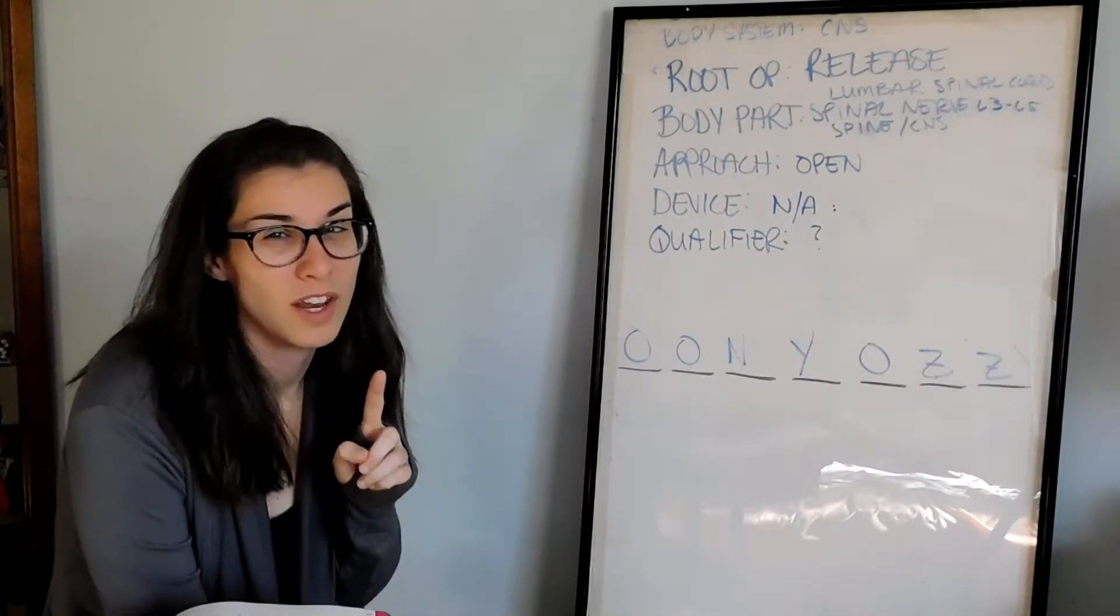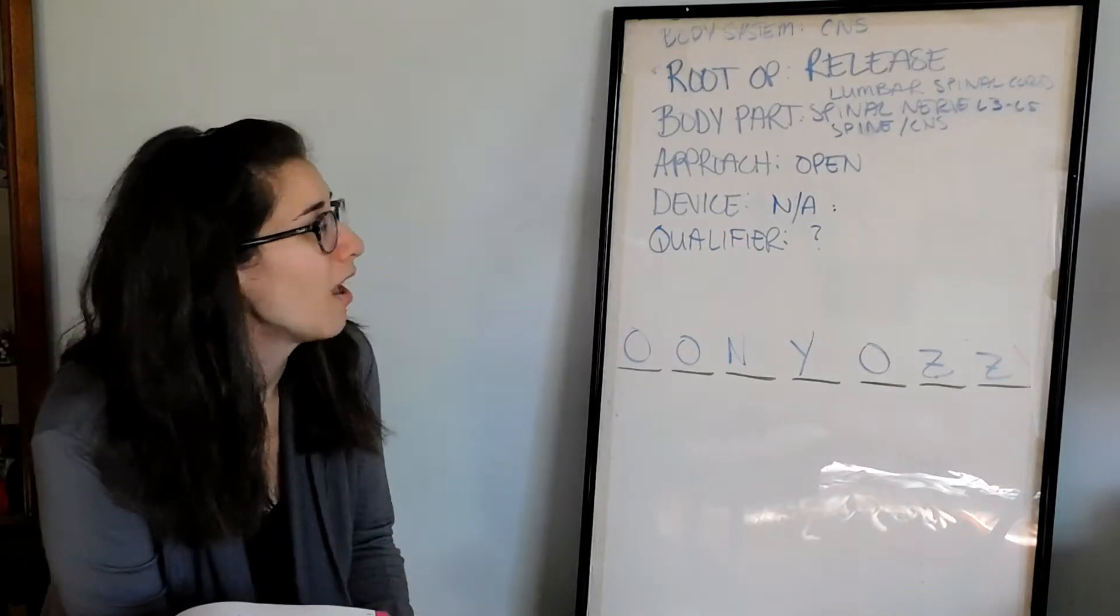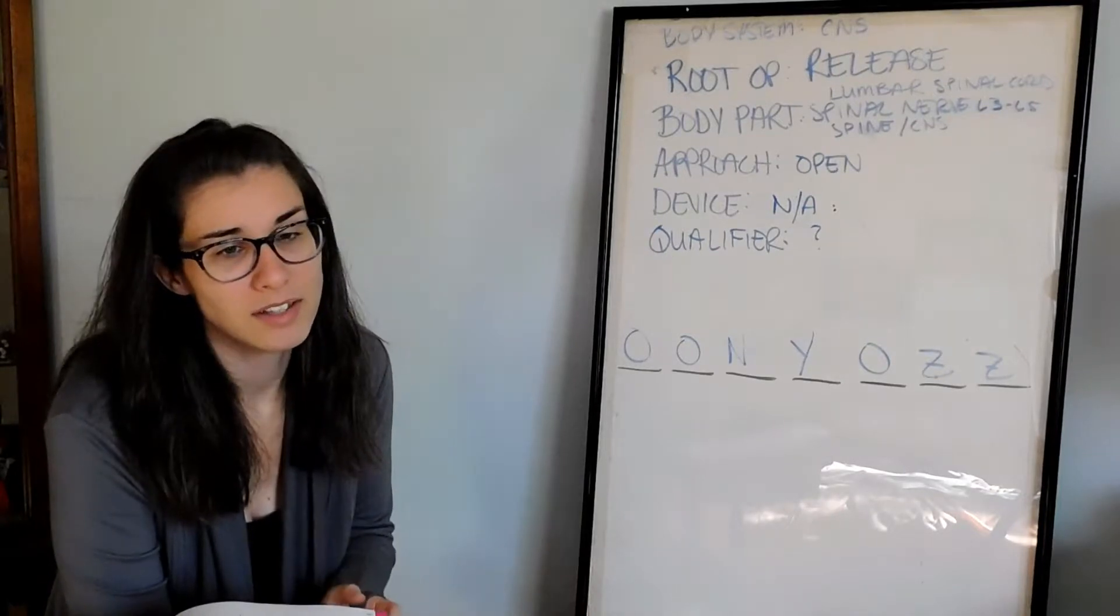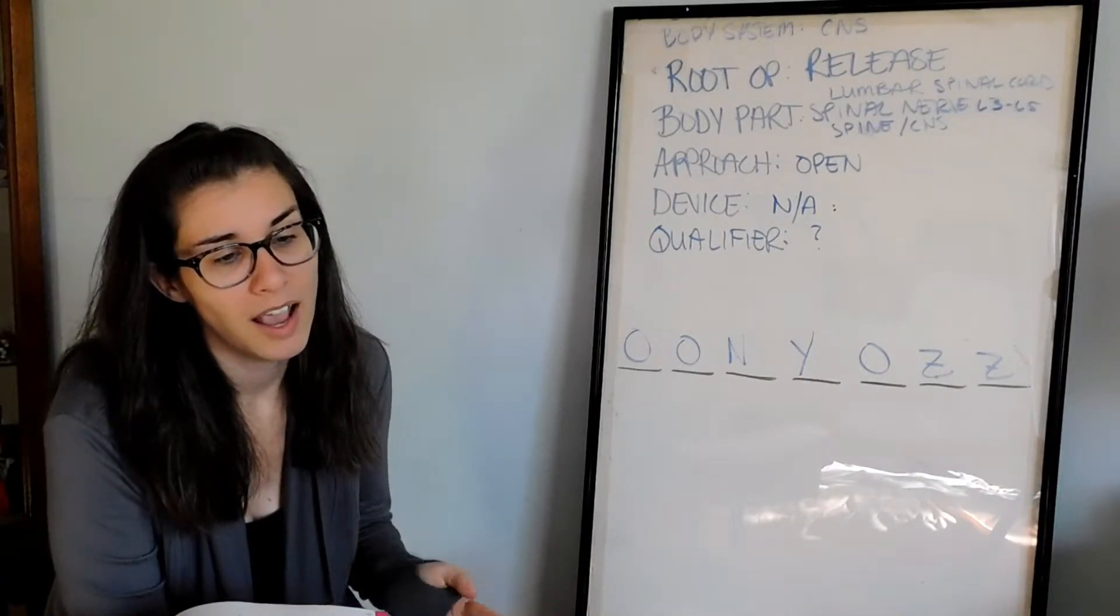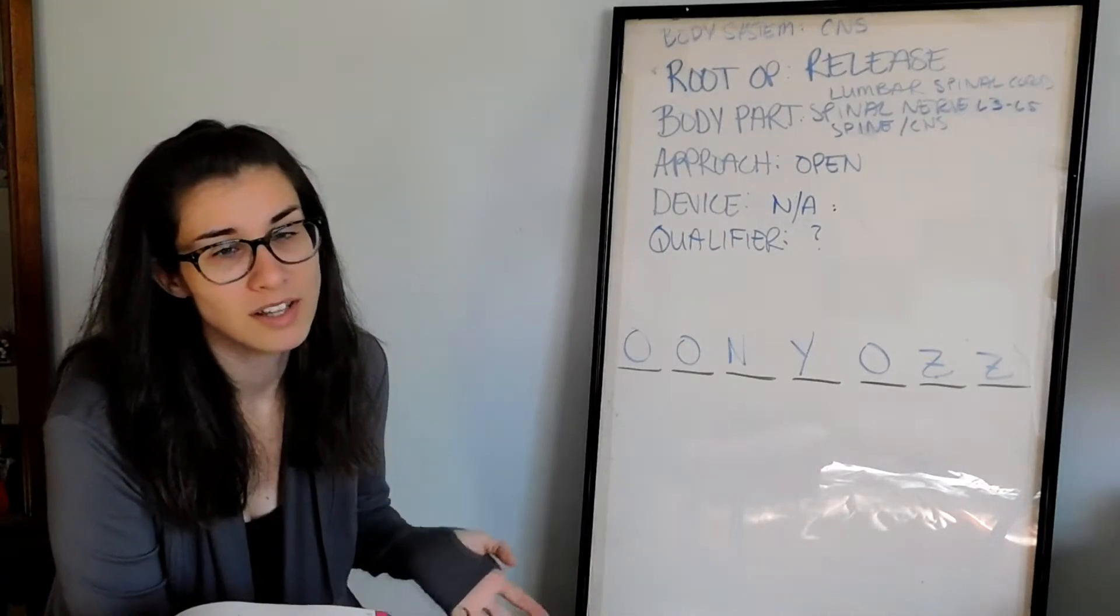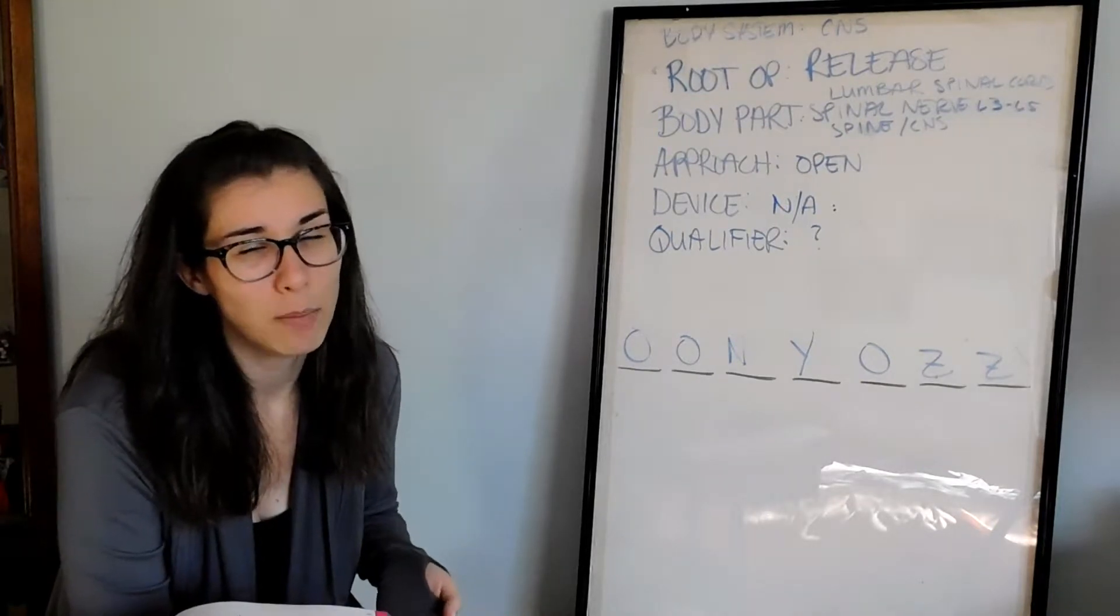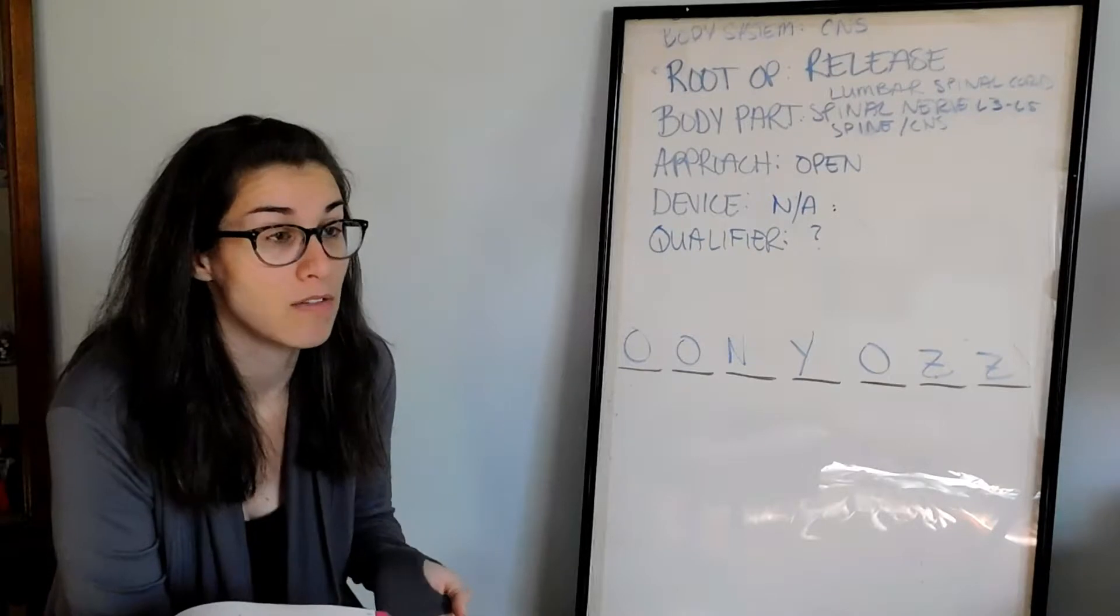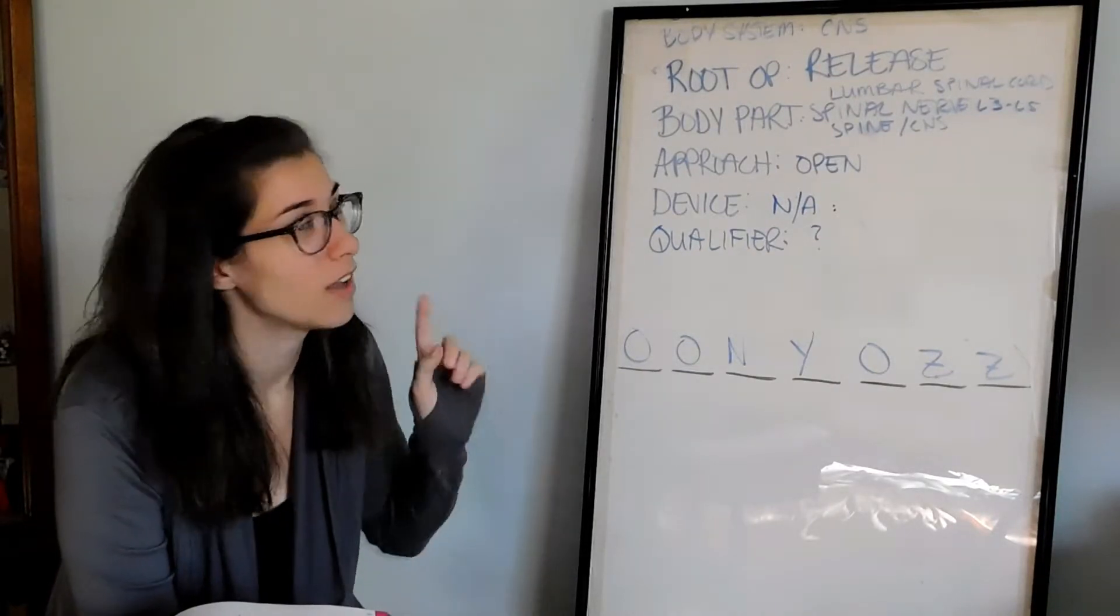And in this table for excision, they have lumbar vertebra. So that would be if they're excising part of the bone. But in the previous video, again I'll have a link in the description, I believe it should be release because there was an abscess in the epidural space and lumbar stenosis. And they were draining that purulent fluid from that abscess because I believe that was also causing pressure on the spinal nerves.